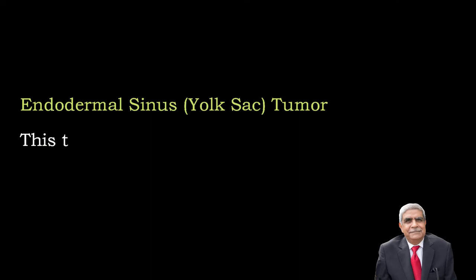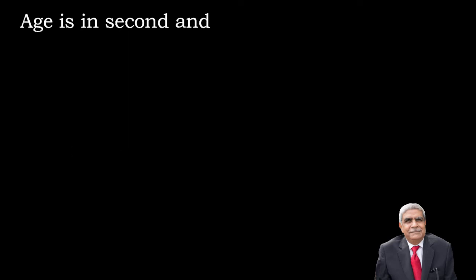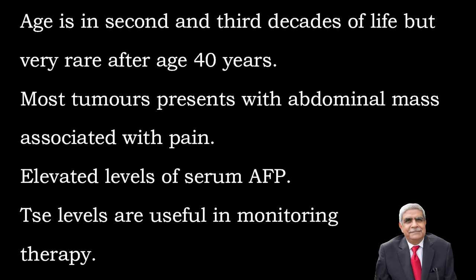As we are discussing the germ cell tumors of the ovary, endodermal sinus tumor or yolk sac tumor is the second most common malignant tumor of germ cell origin. Age is in the second and third decades of life, but very rare after the age of 40 years. Most tumors present with abdominal mass associated with pain.